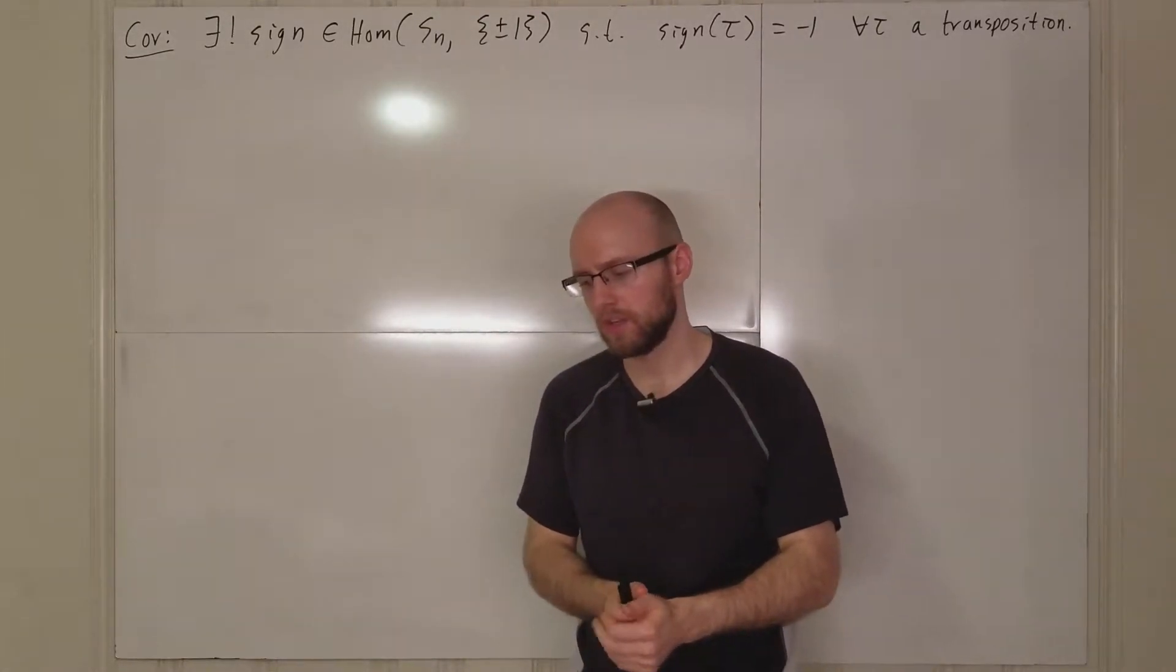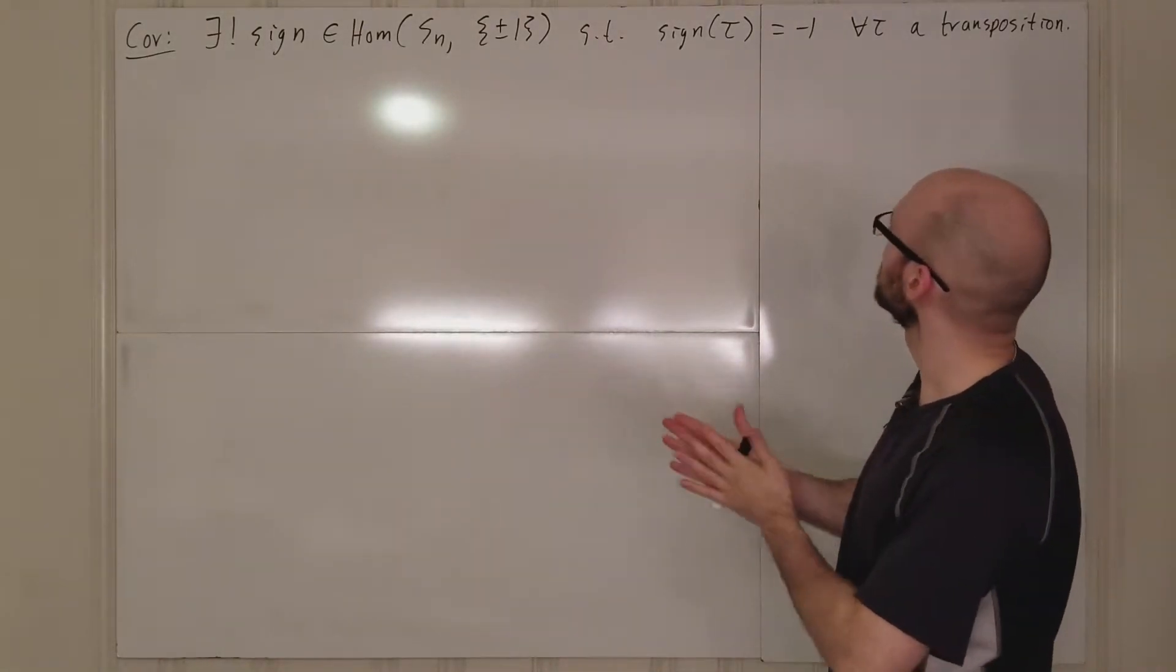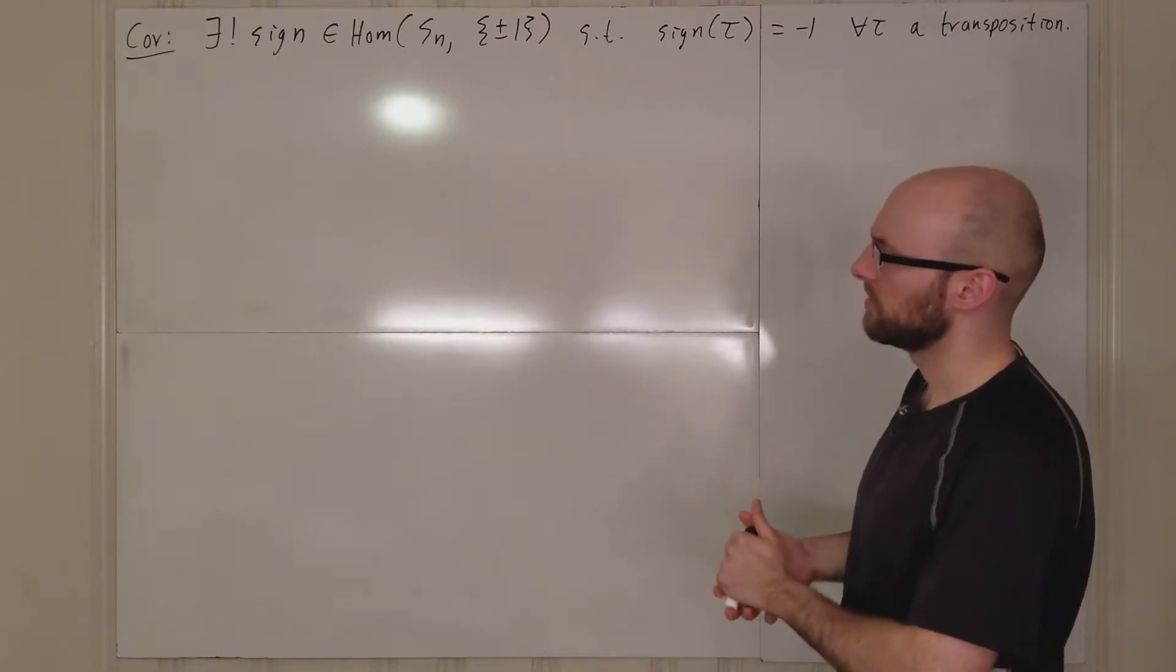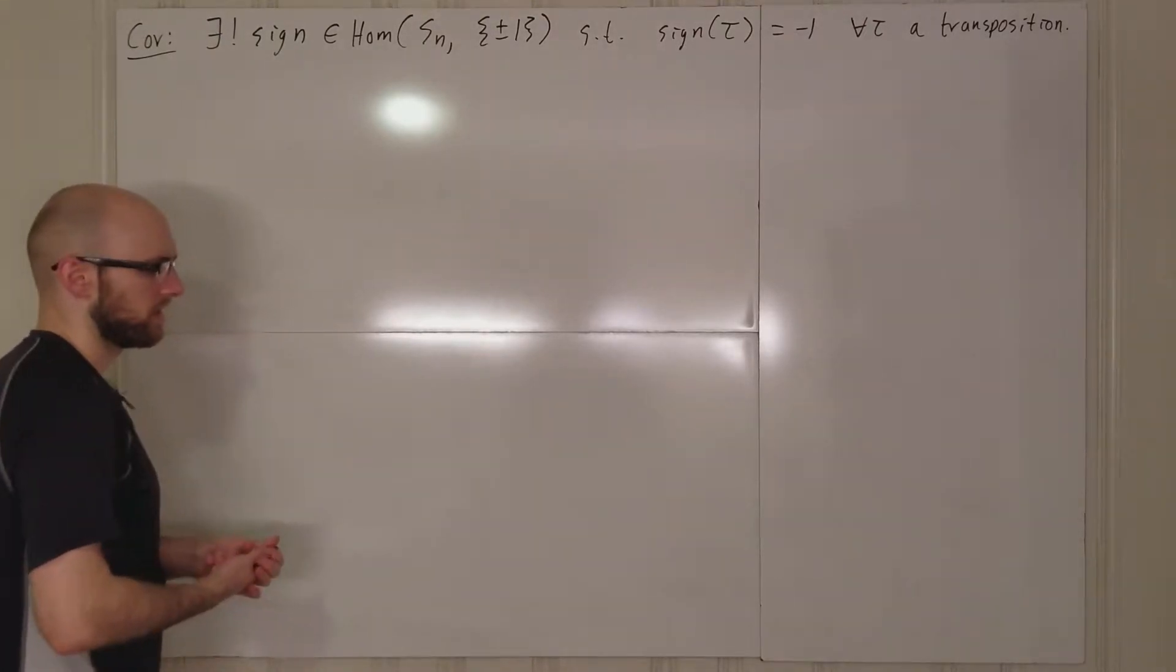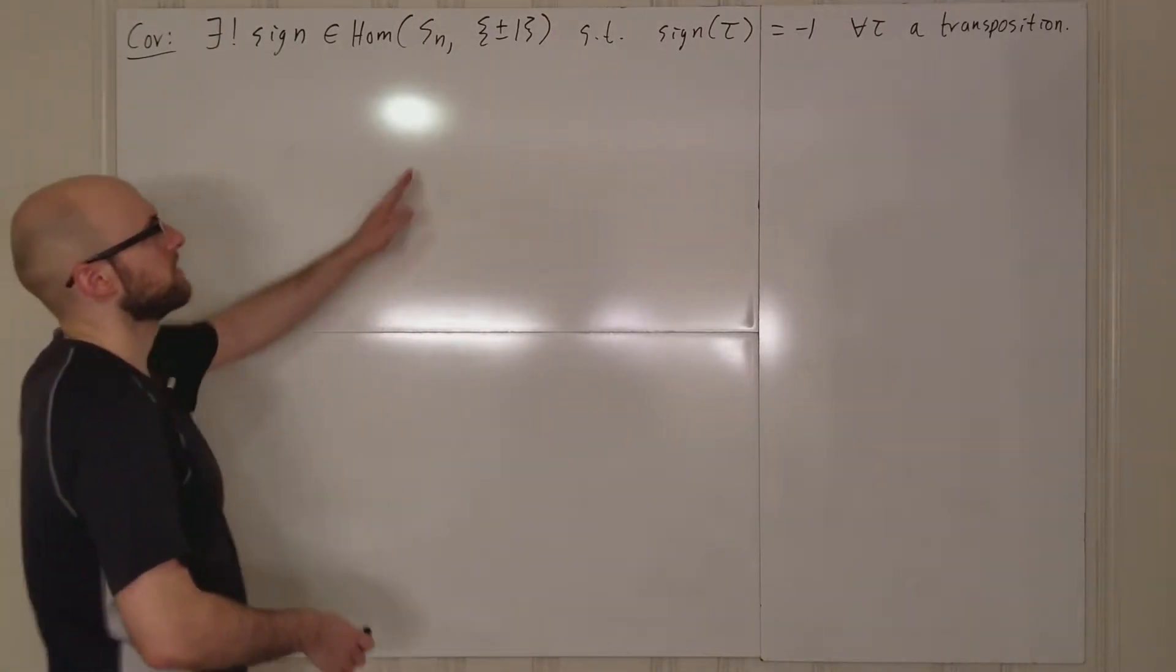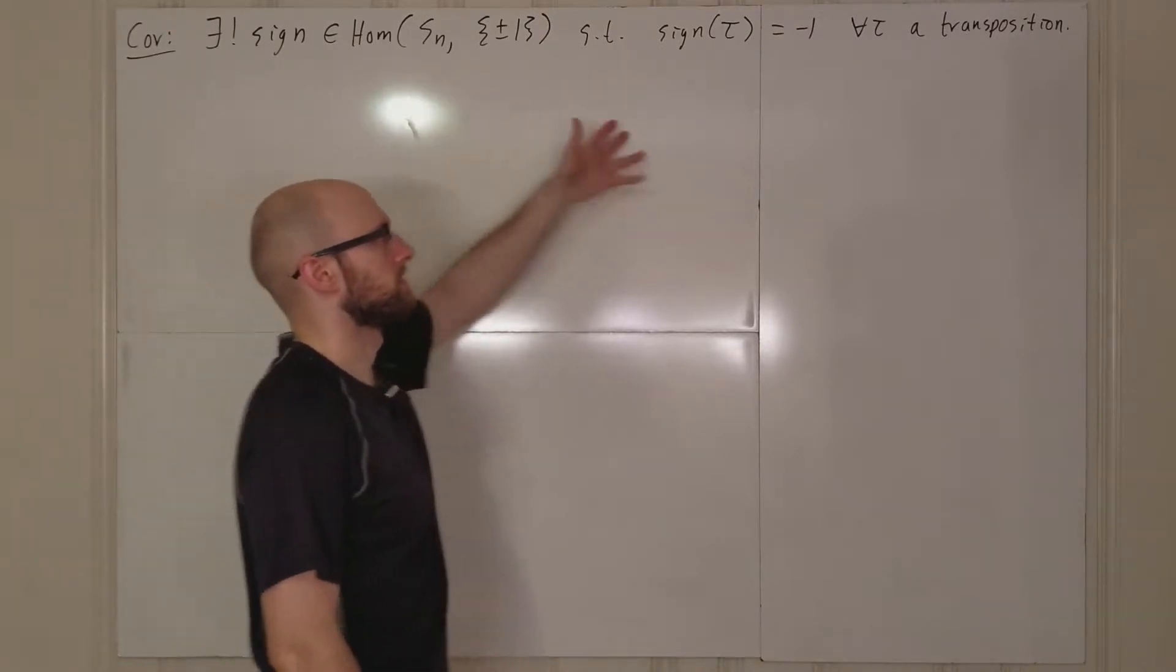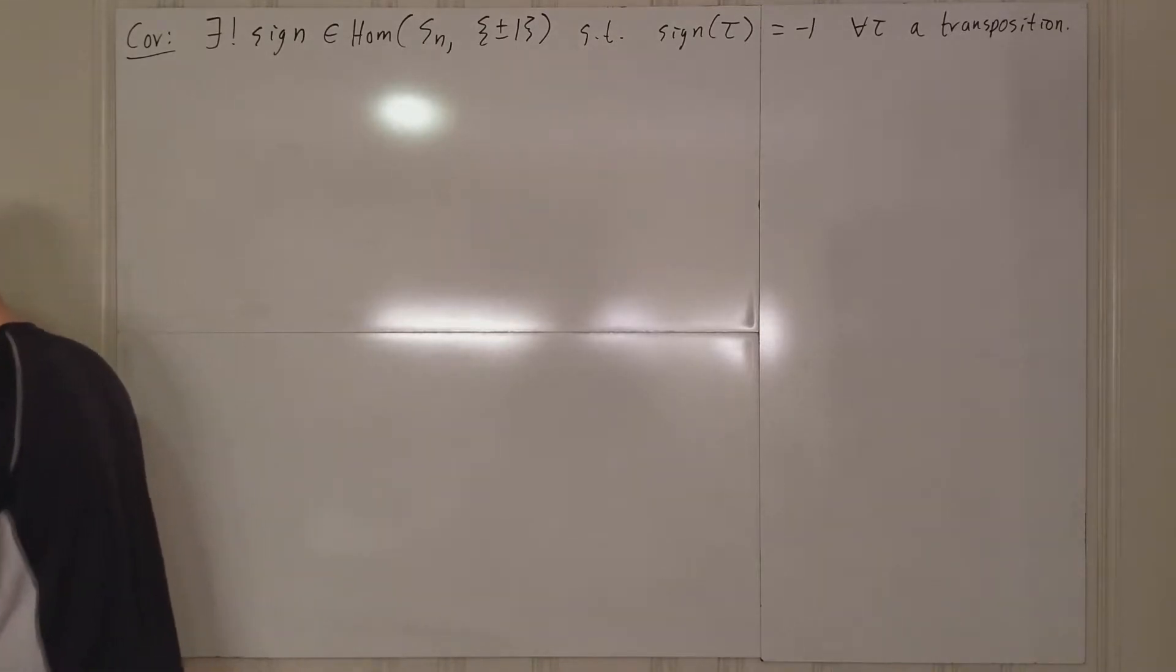Furthermore, is there anything else we need to say to get that there exists a unique homomorphism? Certainly if you were to have any homomorphism, it's enough to determine it on the generating set. And if it's negative one, so that's it, that's all you need, that's all we need to say about that.